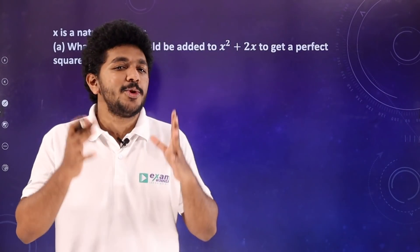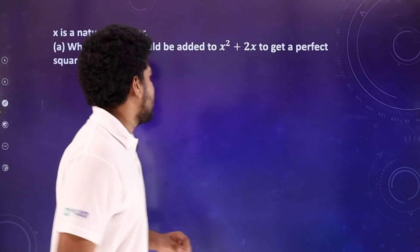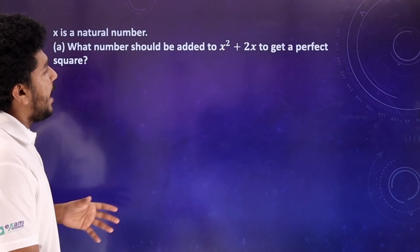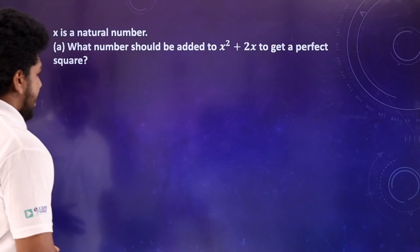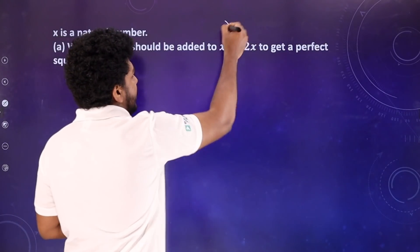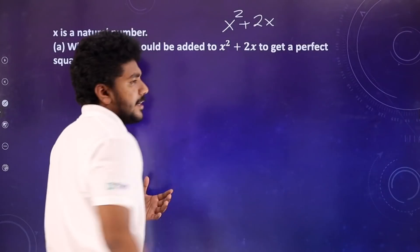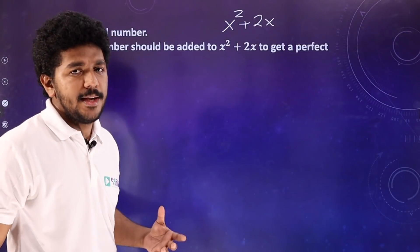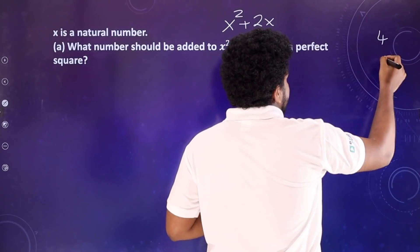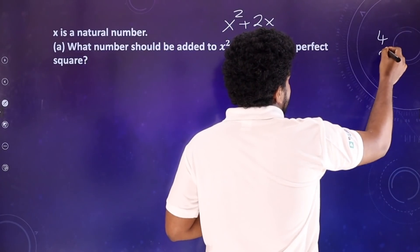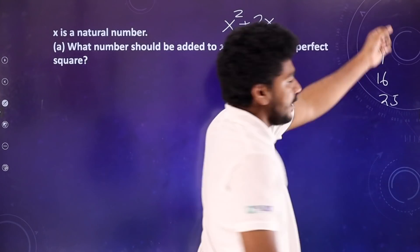That is why you will learn that. The first question is very simple: what number should be added to x² plus 2x to get a perfect square? If you need to make it a perfect square, consider that 2 squared is 4, 3 squared is 9, 4 squared is 16, 5 squared is 25 — these are perfect squares.